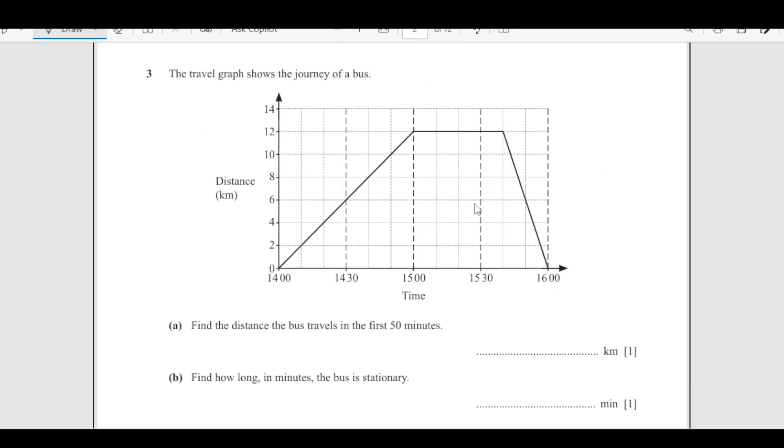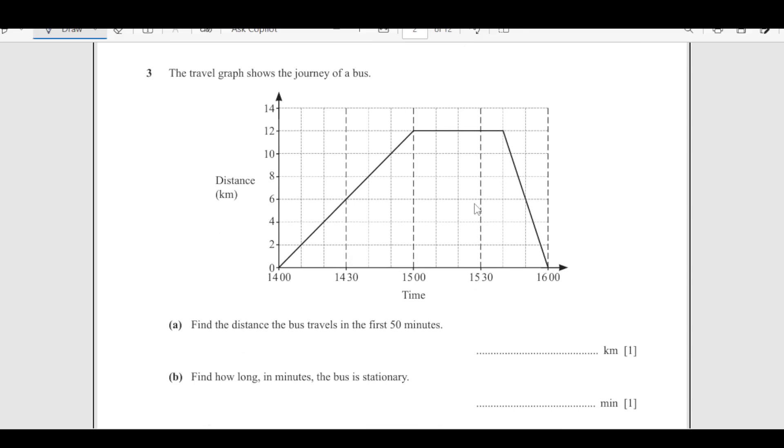Number 3: the travel graph shows the journey of a bus. This is distance along y axis and we have time on this side. Let us see the question. Find the distance the bus travels in first 50 minutes. Starting from here, this is 14:00, this is 14:30, so one section represents 10. 10, 20, 30, 40, 50 is here. So 50 minutes from here to here. How much distance is covered? We will go along this line. You will see it is 10. Answer is 10 kilometers.